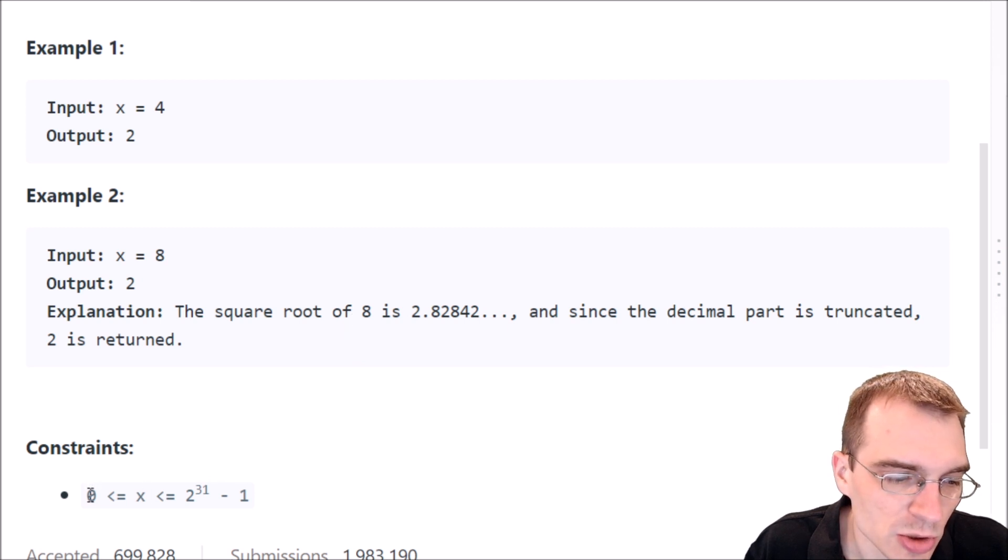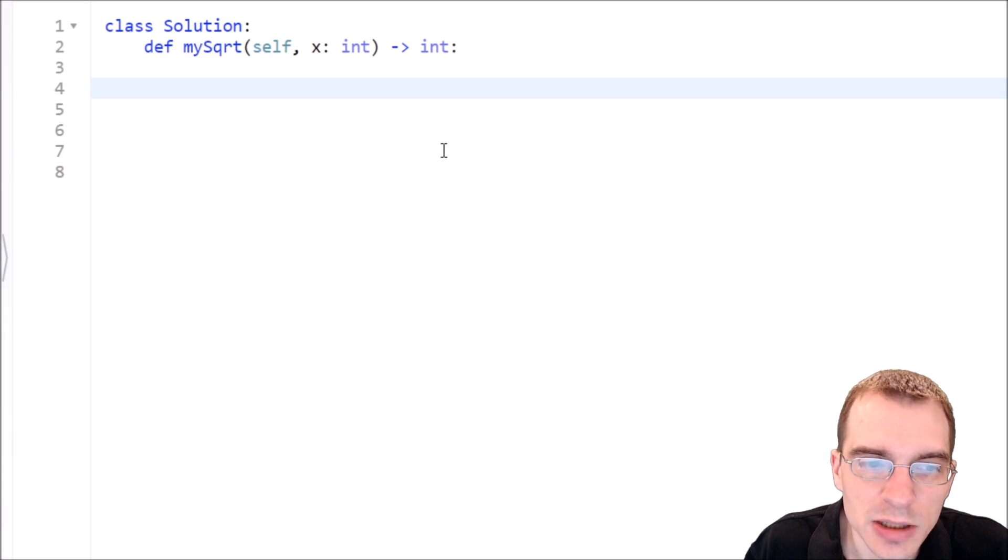Our constraints are the number's going to be between 0 and 2 to the 31 minus 1. So we are going to have to be able to handle fairly large numbers here. This seems like a very simple problem because it's just asking us to do an operation that is just math that Python can just naturally do with either basic imports or just exponentiation.